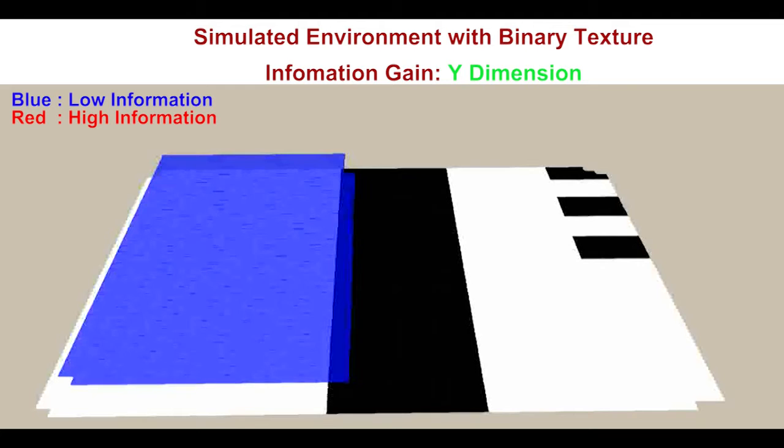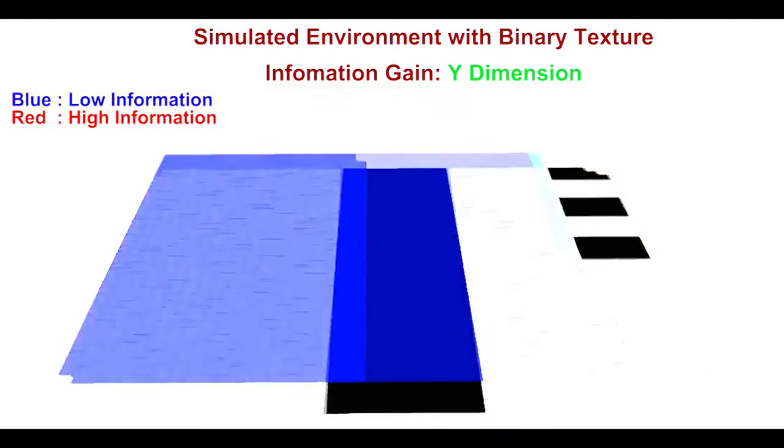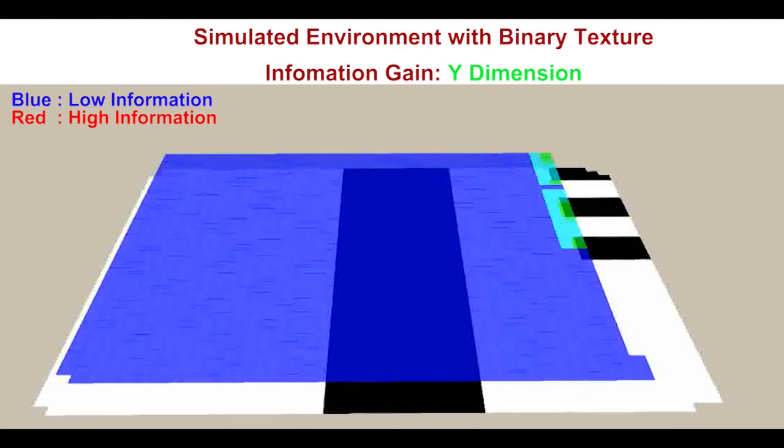In this video segment, we show how the visual information gain affects each state dimension in a different way according to the textures in the scene.